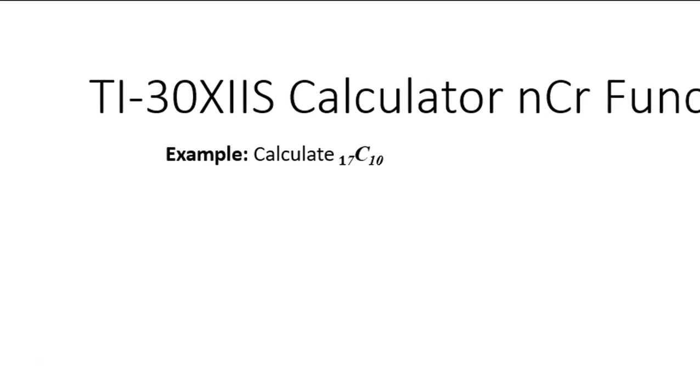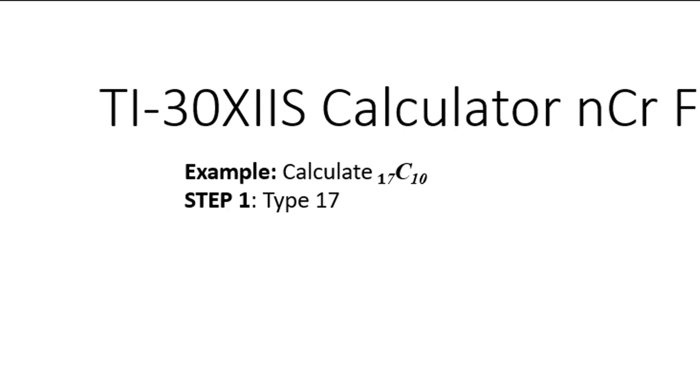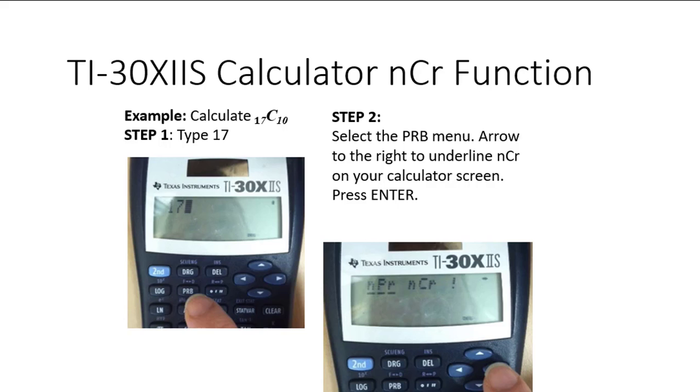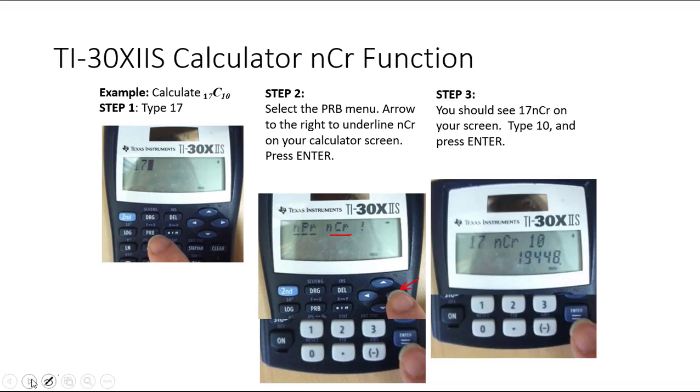Now let's look at what happens on our calculator. We want to calculate 17C10. So we're going to type 17, and then we're going to select the PRB. And in the PRB menu, this time we're going to have to arrow to the right to underline the nCr. And so you're going to see 17nCr, you type 10 and hit enter, and you get 19,448, which is so much smaller. Remember when we did 17P10, it came out to be billions? Because the combinations with the same n and r are always much smaller than the permutations with the same numbers because we're not counting how many ways to arrange them. We select the objects, which is just one part of what you're doing in a permutation, and we don't then go ahead and arrange them. So it's always going to be smaller than the corresponding permutation.